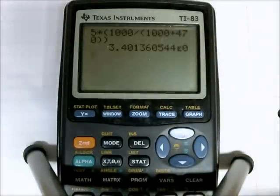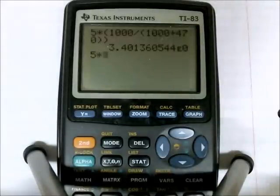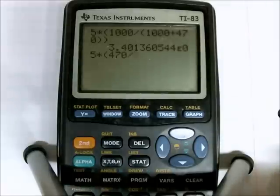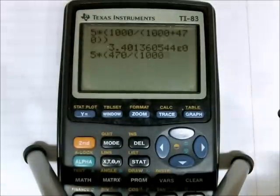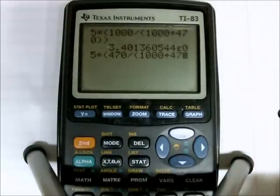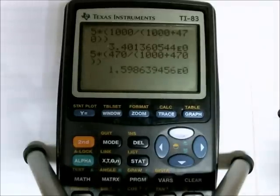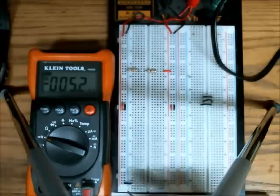And now let's do the calculation for the voltage across R2. So 5 times 470 divided by the sum of 1,000 plus 470. The voltage across R2 is 1.6 volts.